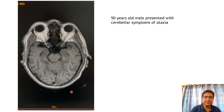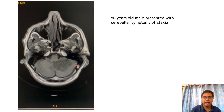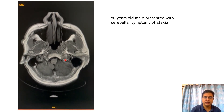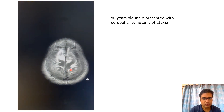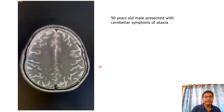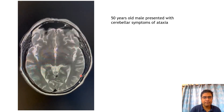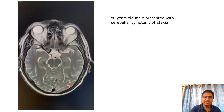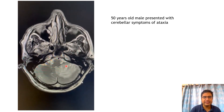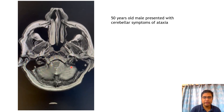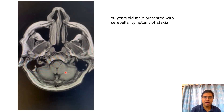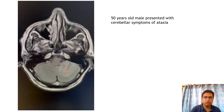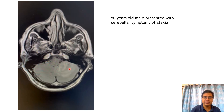On T1-weighted images, we can see a hypointense lesion in the left cerebellar hemisphere extending up to the vermis. On T2-weighted images, there is corresponding hyperintensity seen with prominent cerebellar folia. There is mild mass effect in the form of effacement of the fourth ventricle. On FLAIR images, we can see subtle hyperintensity.